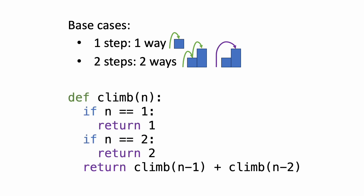Now that we have the base cases, our recursive definition will work. Here's what the code looks like in Python, where the function name is going to be 'climb'. This part takes care of the base cases: if n equals one, we return one, and if n equals two, we return two. If n is greater than two, we hit the recursive case, so we call climb with n minus one — the number of ways to climb n minus one steps — plus the number of ways to climb n minus two steps, and we return that result.